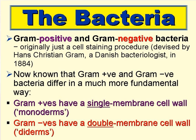One common way of dividing the bacteria is into gram-positive and gram-negative bacteria. Originally, this was a cell staining procedure devised by a Danish bacteriologist called Hans Christian Gram way back in 1884. But we now know that gram-positive and gram-negative bacteria differ in a much more fundamental and genetic way. The gram-positives are monoderms — that is to say they have a single membrane cell wall — and the gram-negatives are diderms and have a double membrane cell wall.